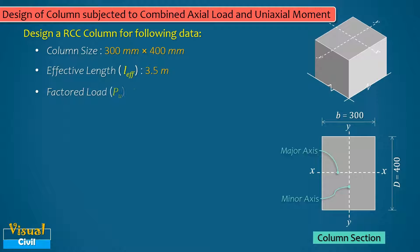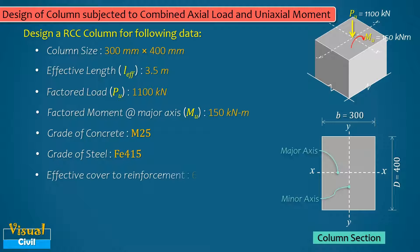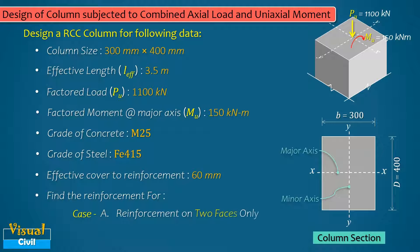The column is subjected to a factored load of 1100 kN and a factored moment of 150 kN·m about the major axis. The grade of concrete and steel are M25 and Fe 415 respectively. The effective cover to the reinforcement is 60 mm. Find the reinforcement for two cases: Case A — reinforcement on two faces only, and Case B — reinforcement on all four faces.